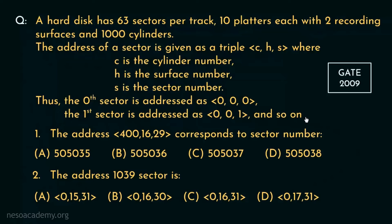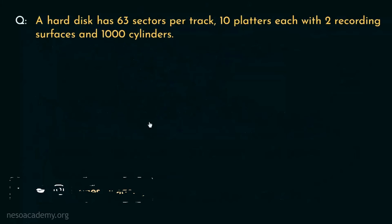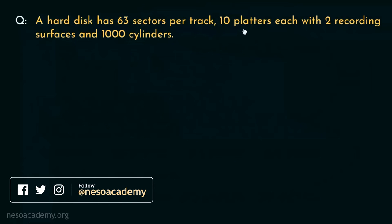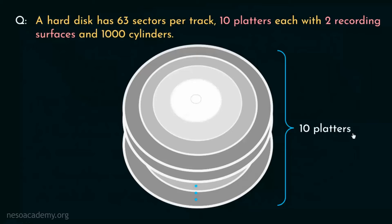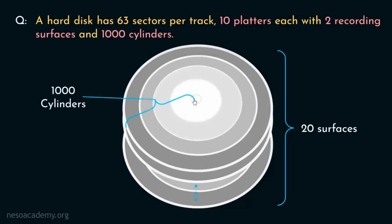Before beginning the solution, let's understand this particular organization. The disk has 63 sectors per track, 10 platters each with 2 recording surfaces, and 1000 cylinders. This entire disk pack is comprised of 10 platters. Each platter has 2 recording surfaces, so altogether there are 20 surfaces. The specification of 1000 cylinders means there are 1000 tracks in each platter. Basically, all the tracks in one arm position form a cylinder, so since there are 1000 tracks per platter, there are 1000 cylinders.